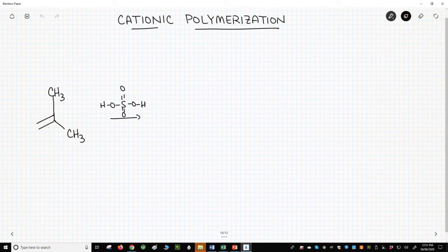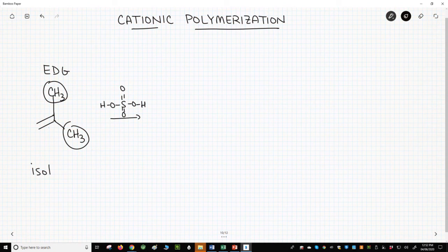On the screen is an alkene. This alkene is not remarkably electron-rich, but it does have two methyl groups, which are weak electron-donating groups. This alkene is called isobutylene, or 2-methylpropene.